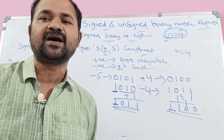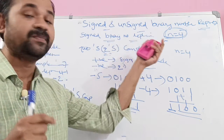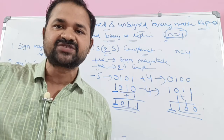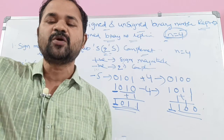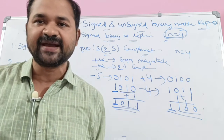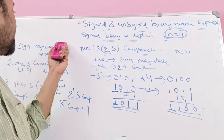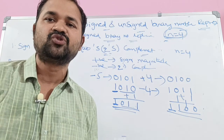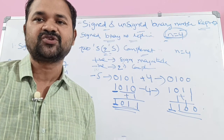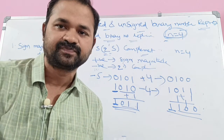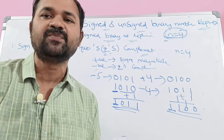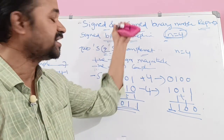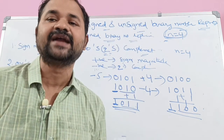The range of the signed binary number is −2^(n−1) to 2^(n−1) − 1, whether it is sign magnitude representation, one's complement, or two's complement. In all notations, the range is the same. This is about the representation of binary numbers in signed and unsigned formats.